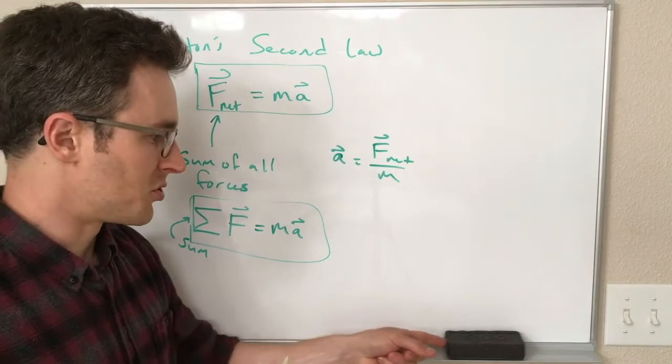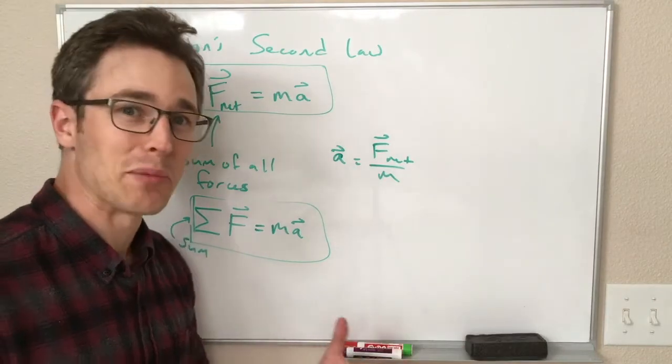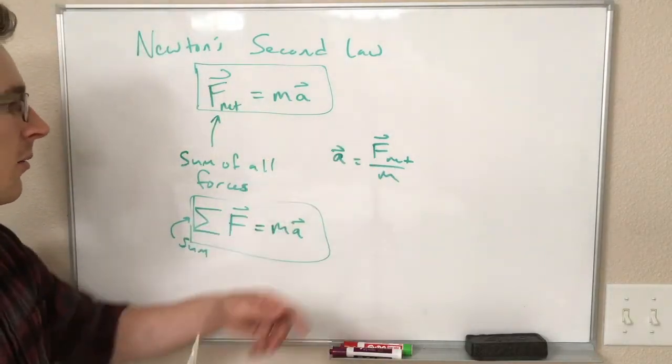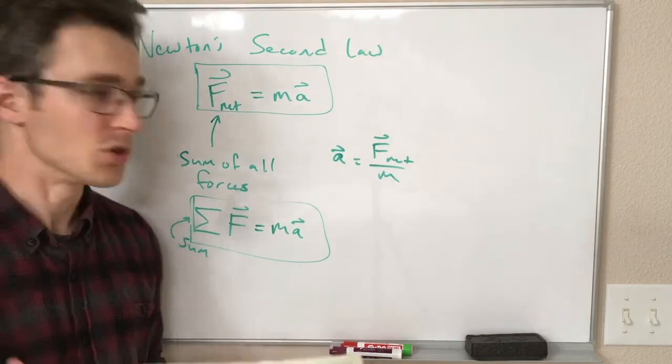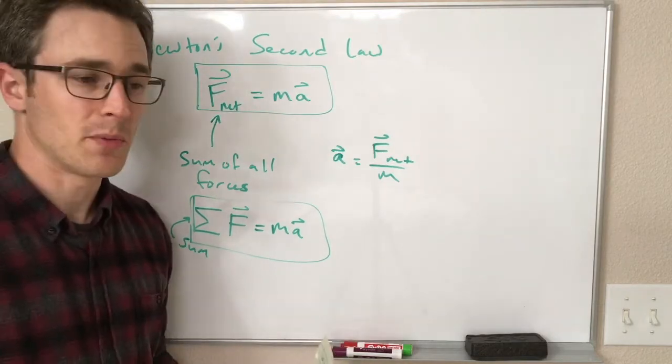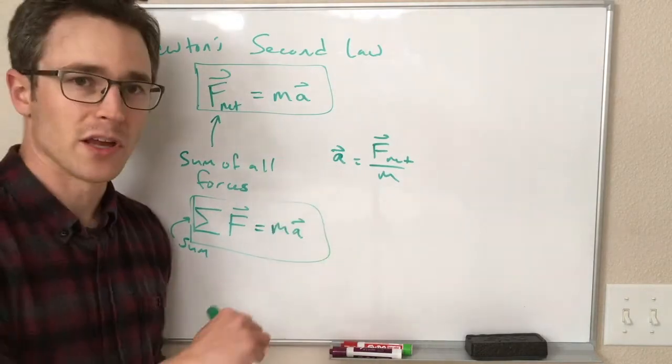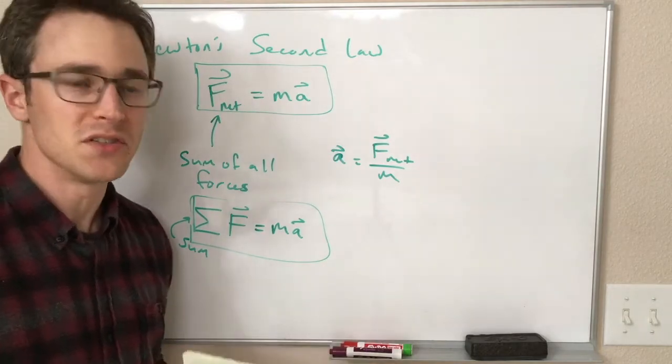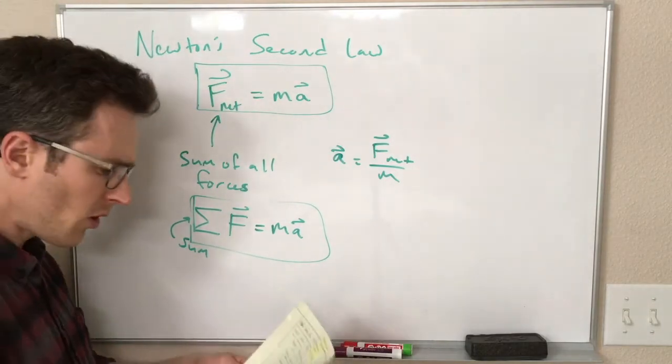This is our pushing on the heavy block versus pushing on the light block business. This is consistent with that picture, which is good. Objects with big inertial mass are hard to move. They're hard to accelerate. Objects with small inertial mass are easy to move and accelerate.